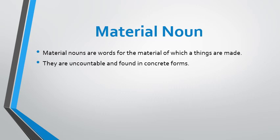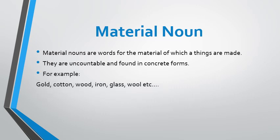Material nouns are uncountable and in concrete form — we find them in nature and human beings can create something else from them. Examples include gold, cotton, wood, iron, glass, and wool. You should always remember that a material noun will always be in singular form. For example, 'a window is made of glass' — we will never say 'glasses' when referring to the material. Material noun is always in singular form.